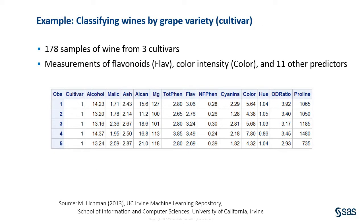The training data in this example consists of 178 samples of wine from three different grape varieties, referred to as cultivars. The predictors are 13 chemical measurements of each sample, including flavonoid content and color intensity. All of these predictors are continuous, although in general they can be continuous or categorical.